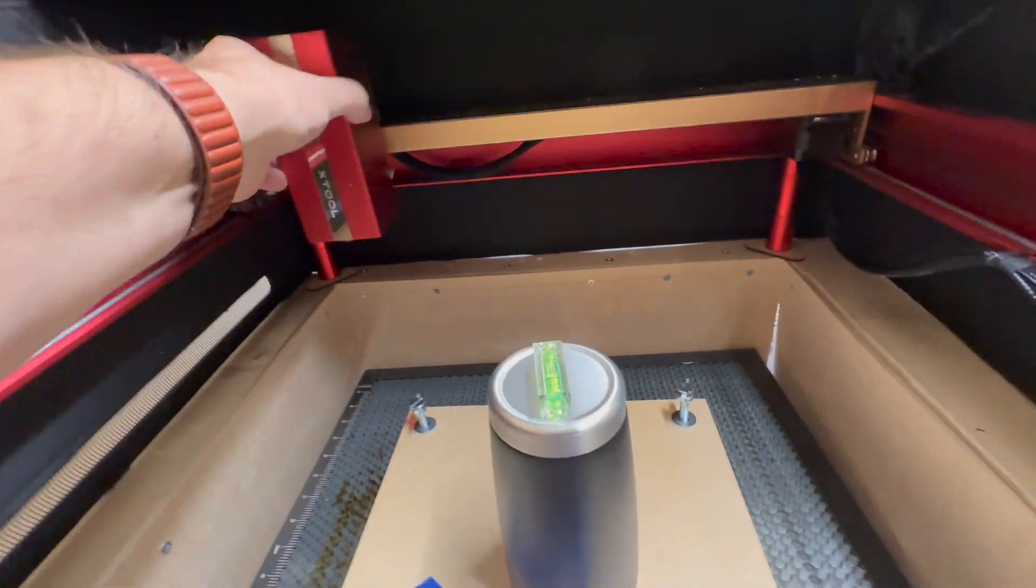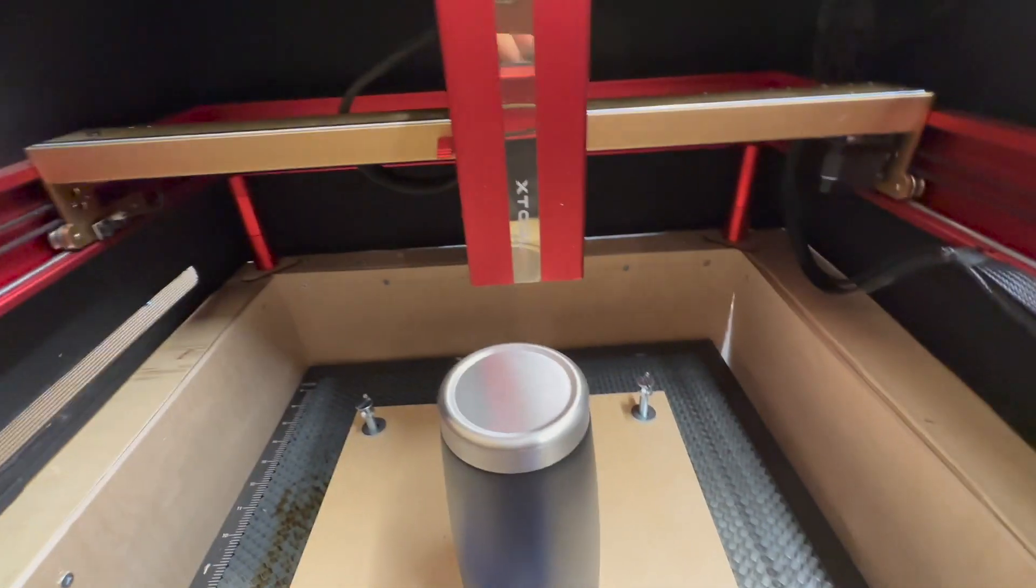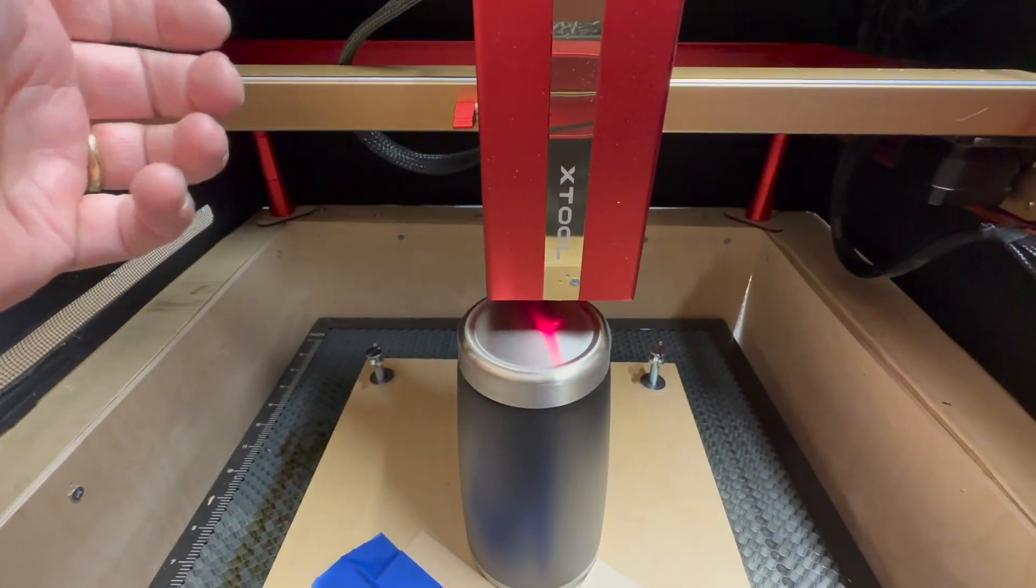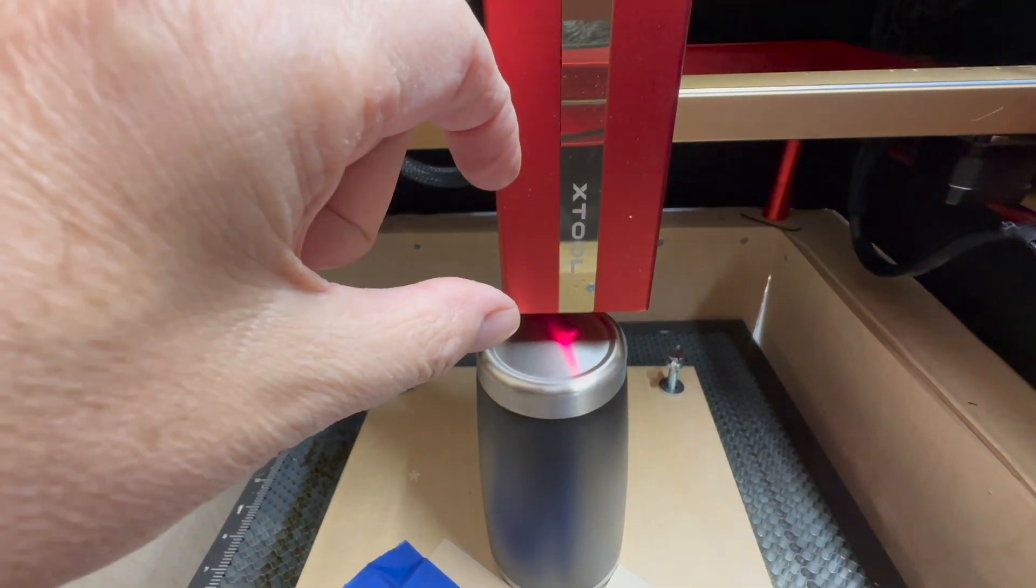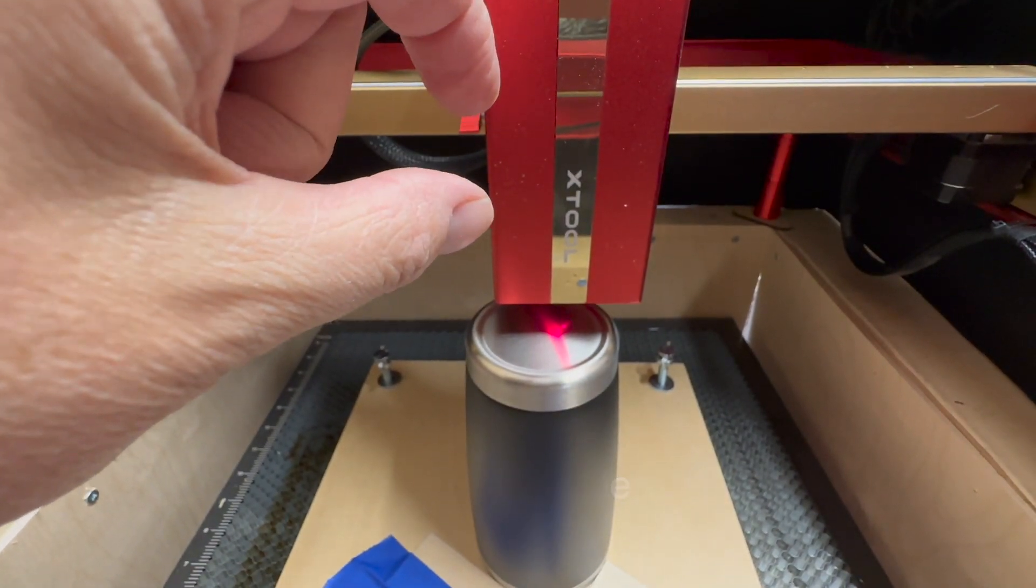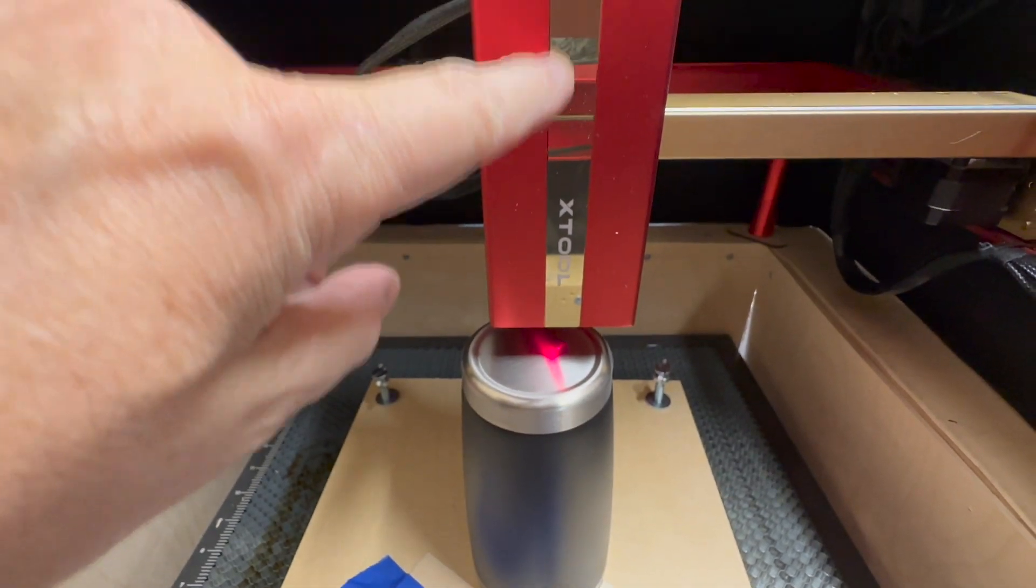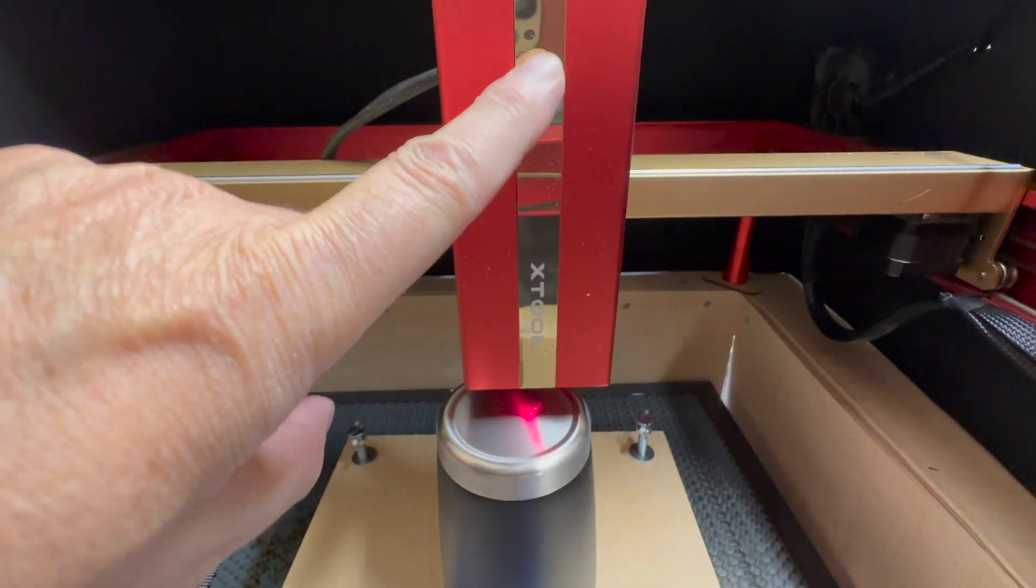I'm using the engraver head, the engraver module. As you can see here, the regular module has, I believe, six millimeters of play. So your focus point, if it's within that six millimeters, is going to be pretty good.